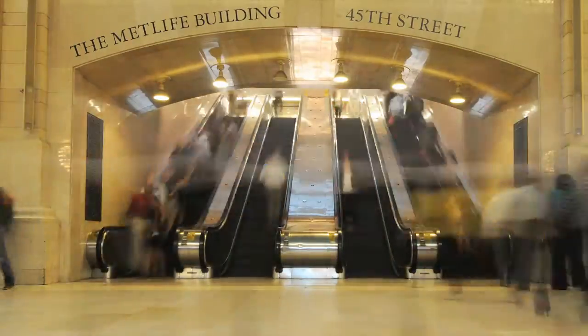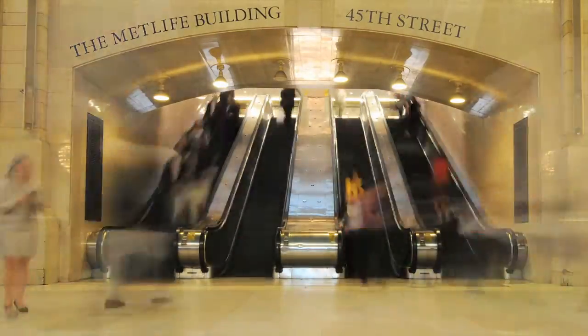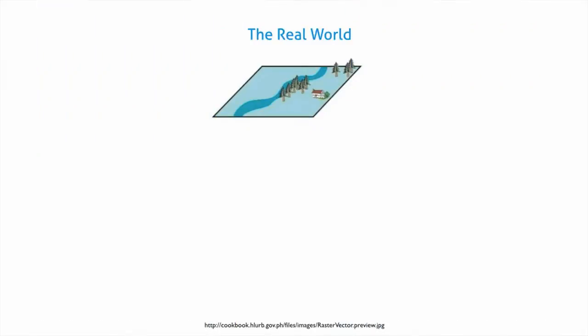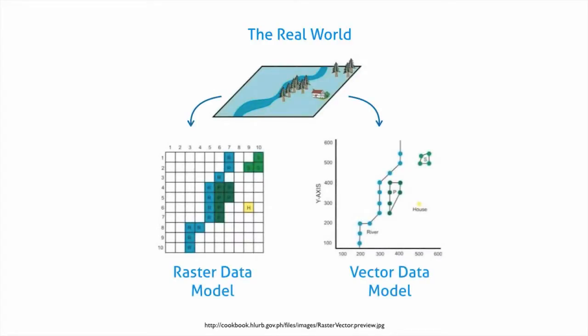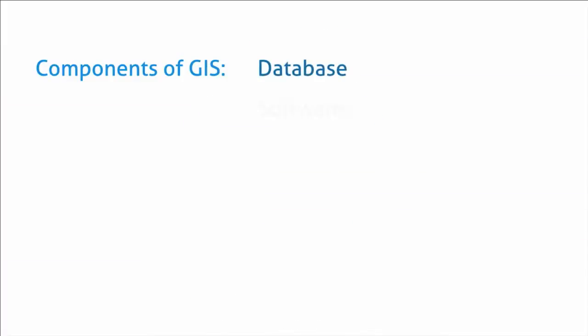The easiest way to think of GIS is to view it as an integrated system of components. GIS includes information about the real world that has been simplified and abstracted into a digital database, including spatial and non-spatial features. GIS is also the hardware and the software that allows for the analysis of the data.